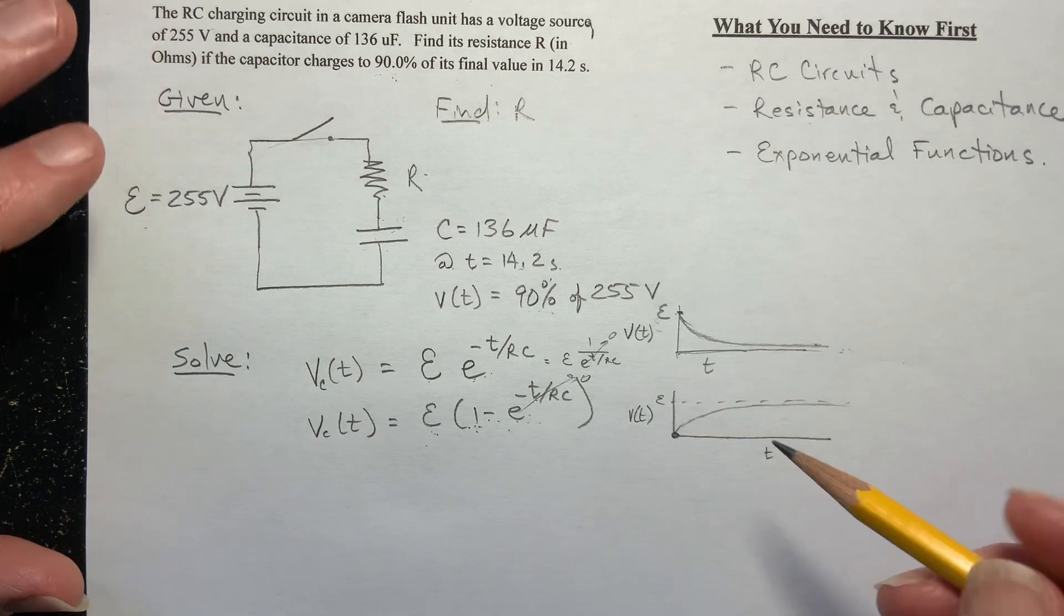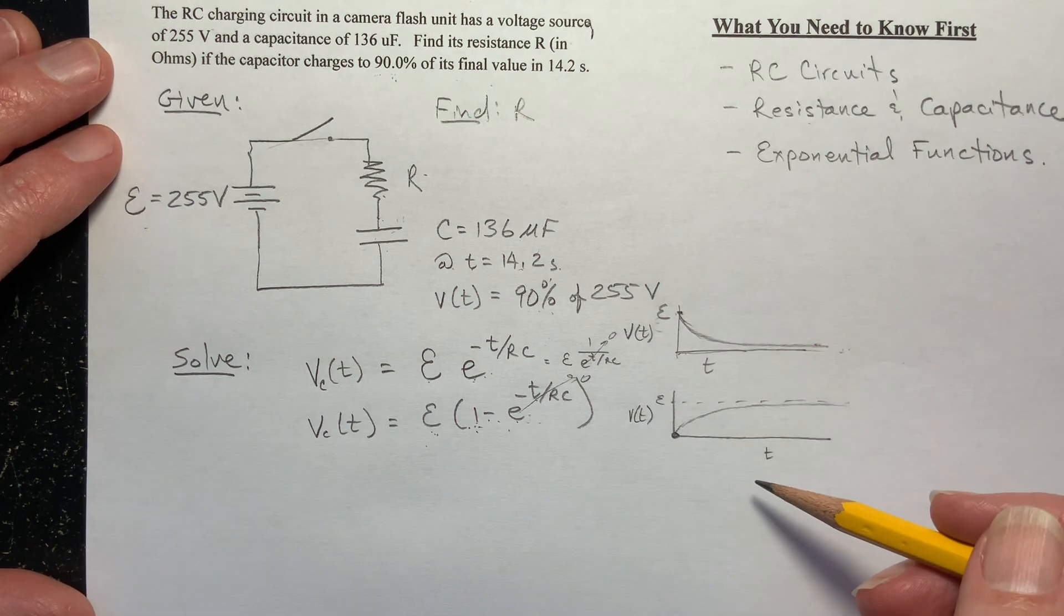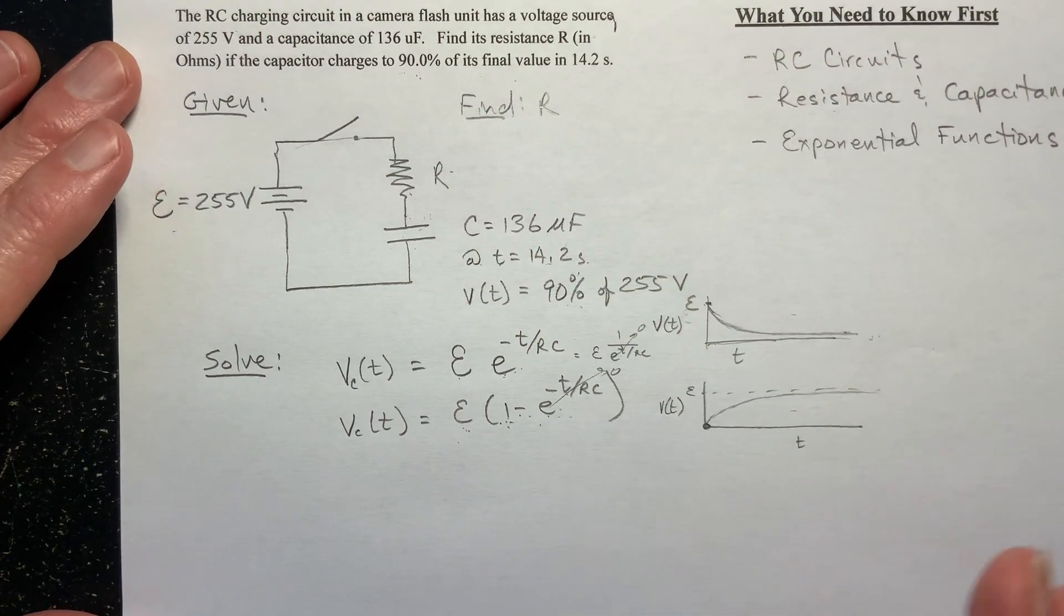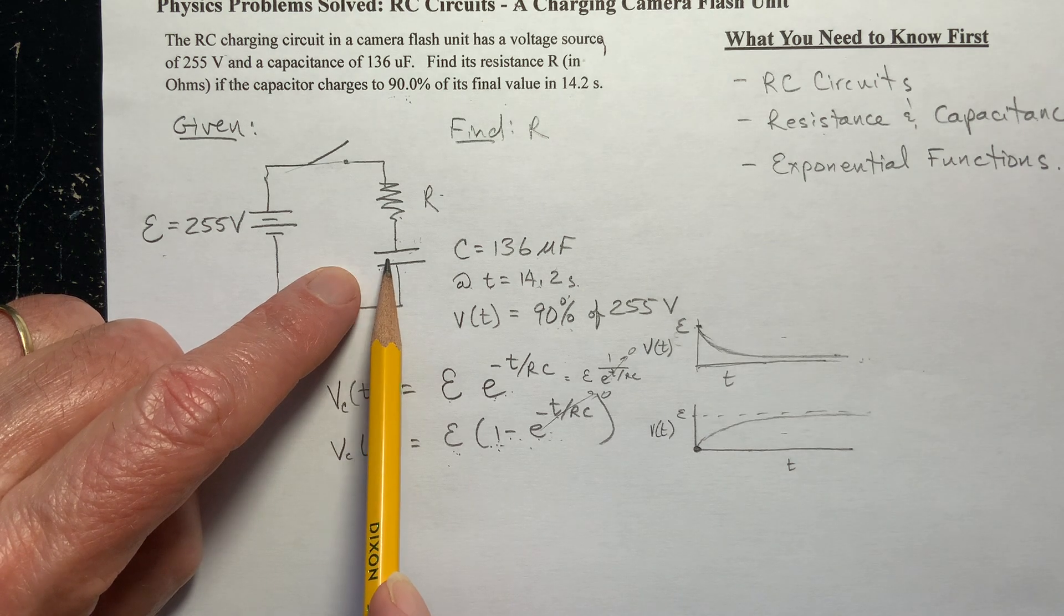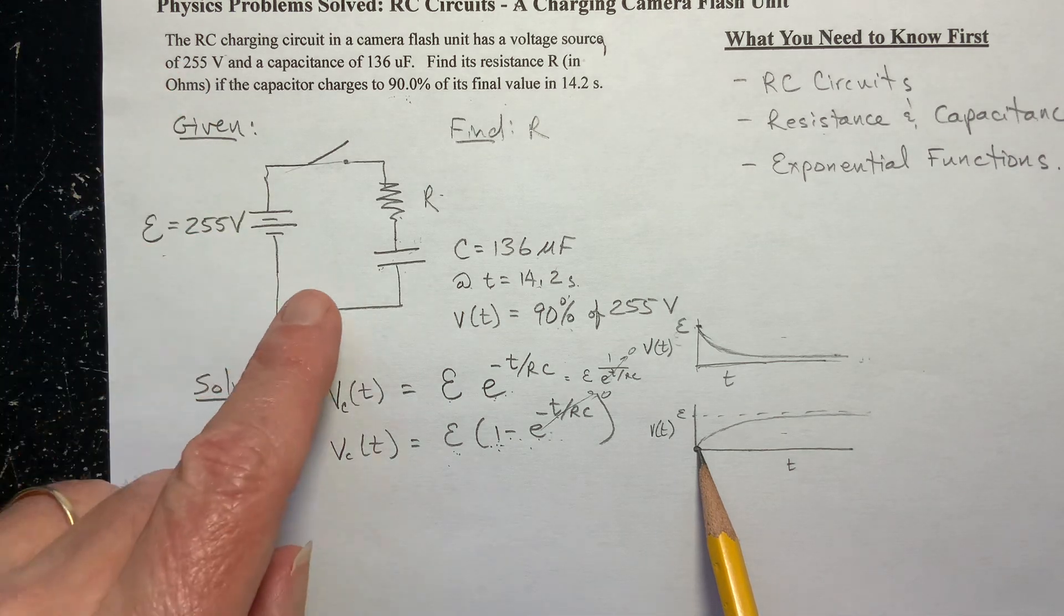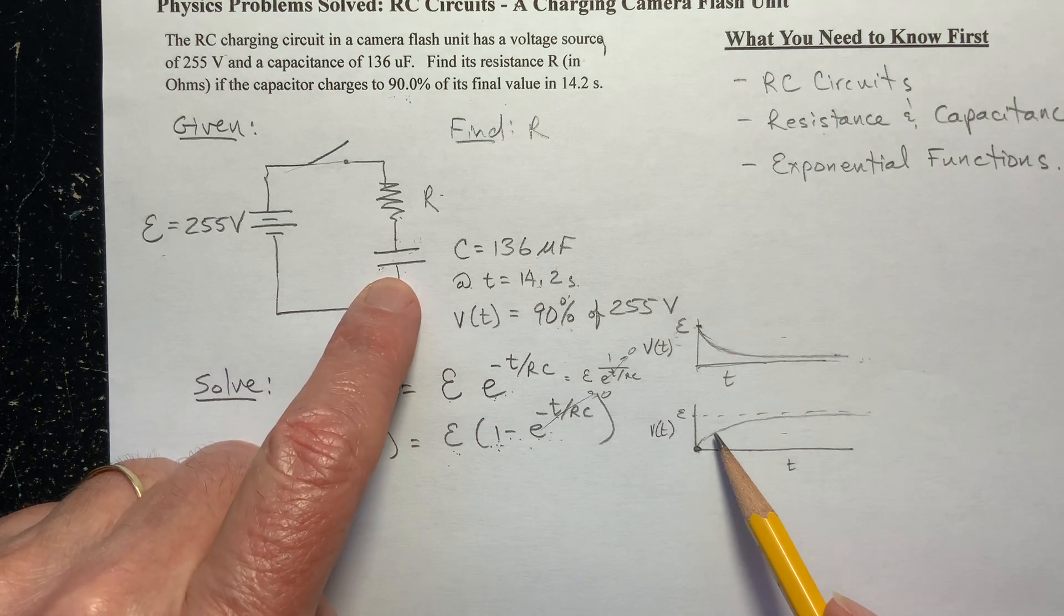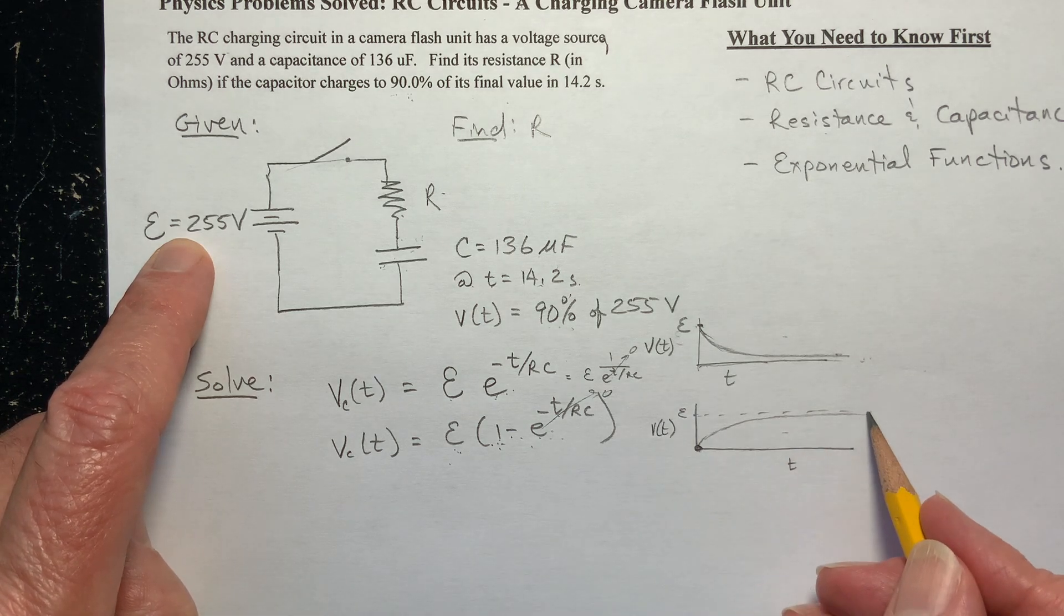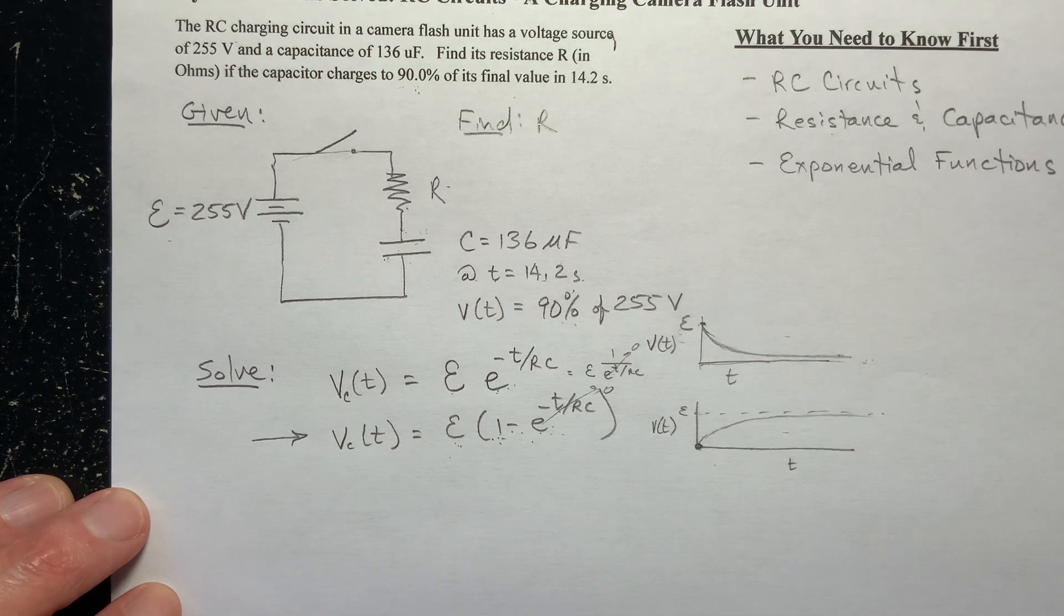So what I do when I'm choosing which equation to use, I draw a quick little sketch and go, okay, well, which one of these applies to this problem? Well, at T equals zero, the voltage on the capacitor is zero because there's no charge on it. And as time goes by, it will fill up and slowly fill up until it has reached its maximum charge, which means it'll have its maximum voltage, which has to be 255 volts. So that means we're going to use this equation right here to solve this problem.